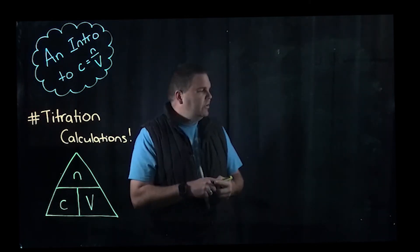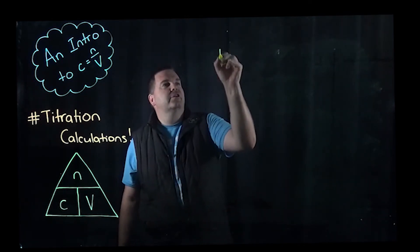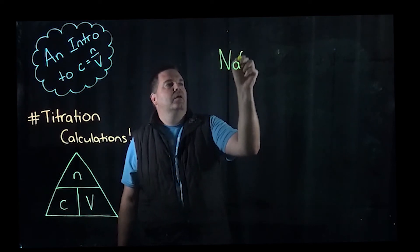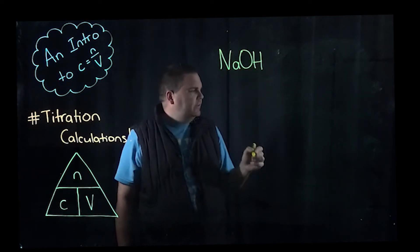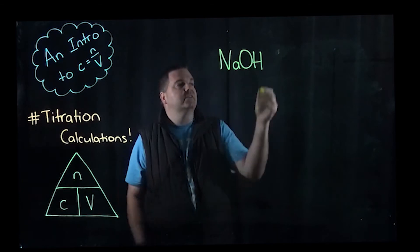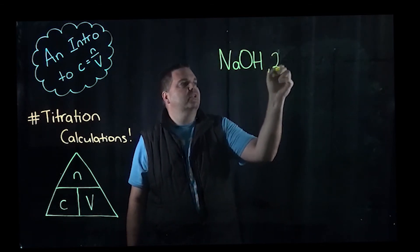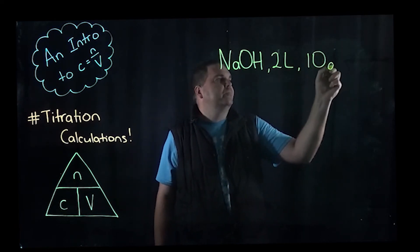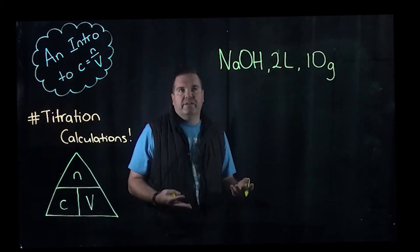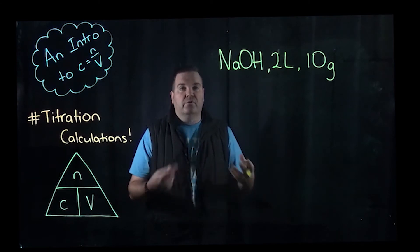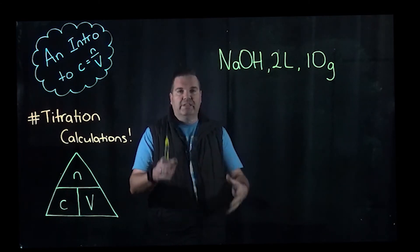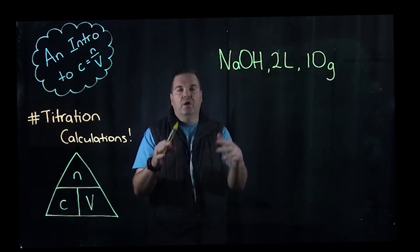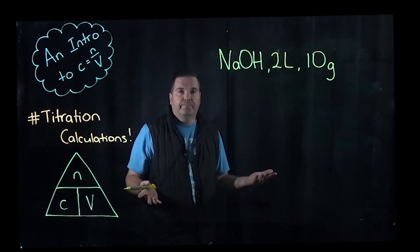So let's say you had a solution of sodium hydroxide and you had a big two litre container. So we've got two litres of it and we had 10 grams. So we've weighed out 10 grams of our sodium hydroxide. We want to dissolve that up in a big two litre volumetric flask. We want to know what the concentration is going to be.